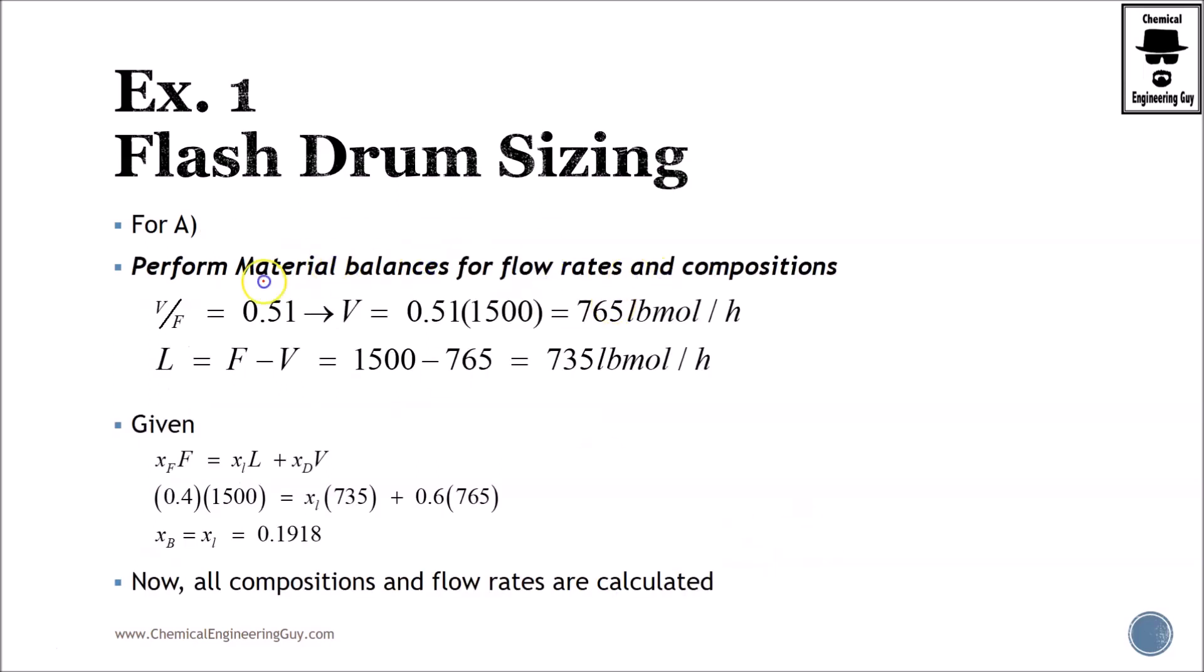Let's perform the material balances. From here, we obtain that V equals 0.51 times F. If we solve for this, it's essentially V times 0.51 times F. F is 1,500, performing this calculation, this is the vapor, and the liquid is nothing more than the difference. Great, we got L and V in molar flow rates.